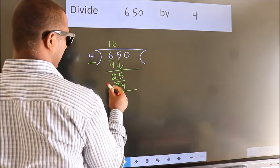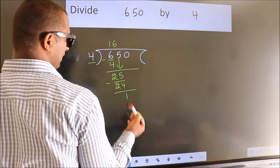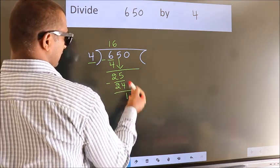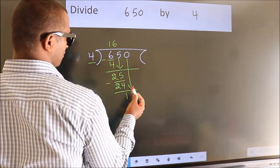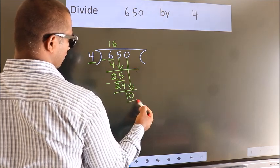Now we subtract. We get 1. After this, bring down the beside number. So, 0 down. So, 10.